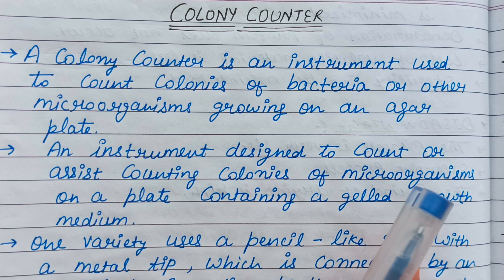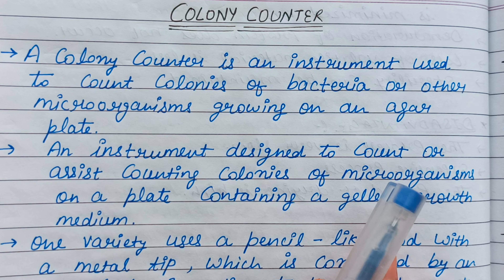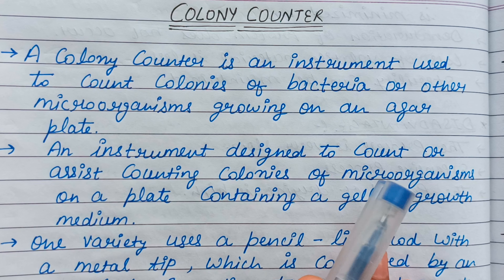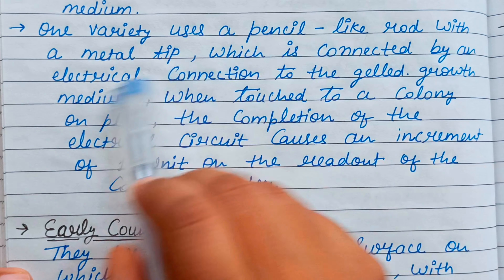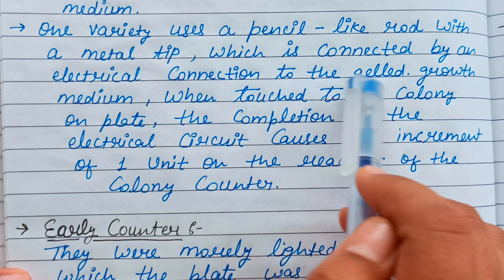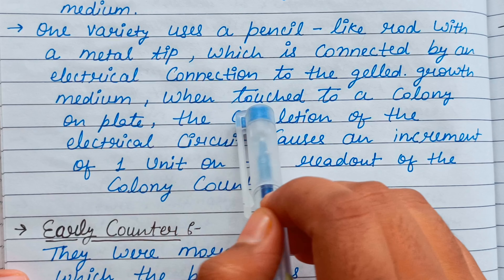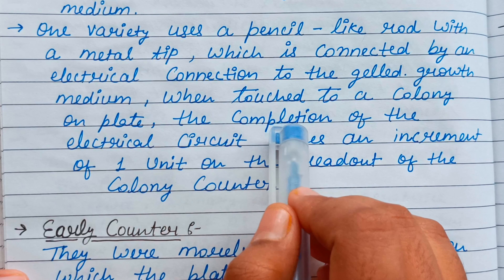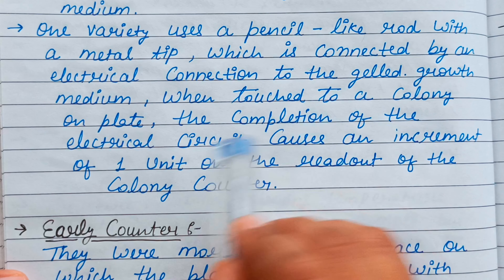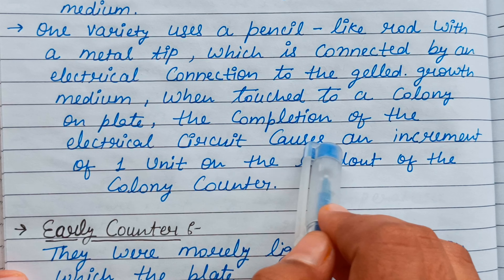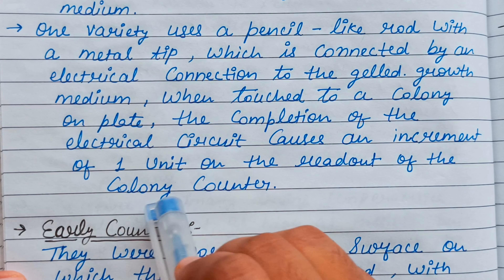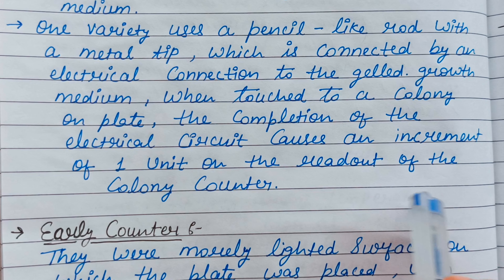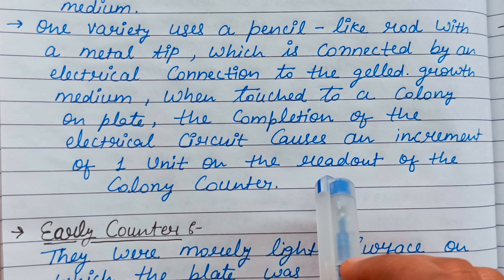The cultured plates come in and the colonies are counted. One variety uses a pencil-like rod with a metal tip which is connected by an electrical connection to the gel growth medium. When touched to a colony on a plate, the completion of the electrical circuit causes an increment of one unit on the readout of the colony counter.